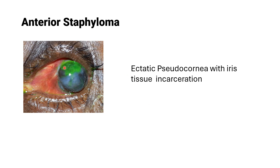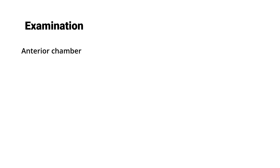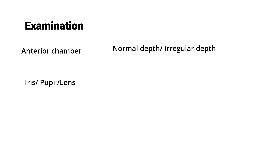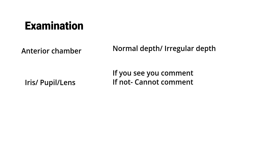Some books mention anterior staphyloma as Grade 5. This is an ectatic pseudocornea with iris tissue incarceration within it. For further examination, assess the anterior chamber — it can be normal depth or irregular depth; in adherent leucoma it is shallow in certain areas and deeper in others. For iris, pupil, and lens, only mention them if you can see them. If you cannot, state that you cannot comment because you cannot see the contents behind the corneal opacity.